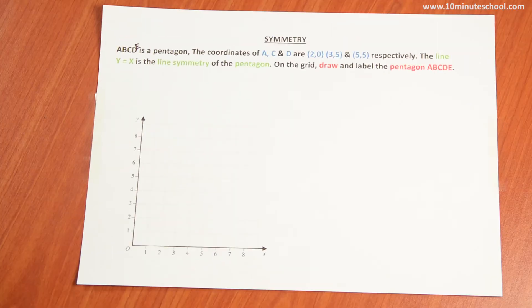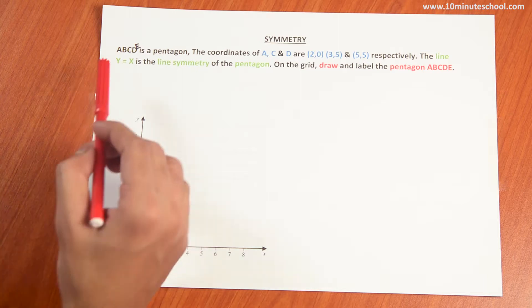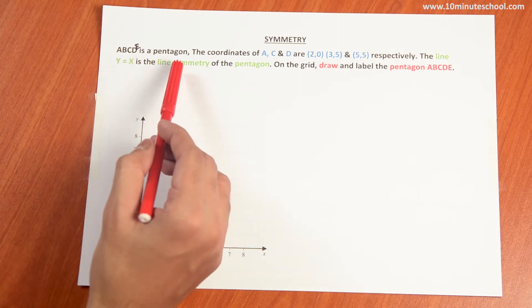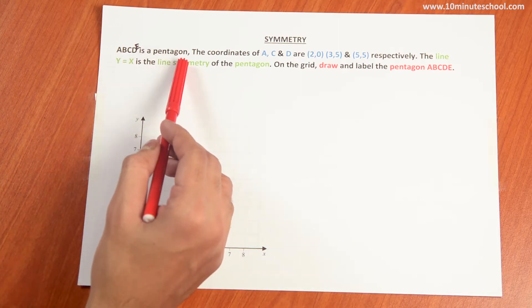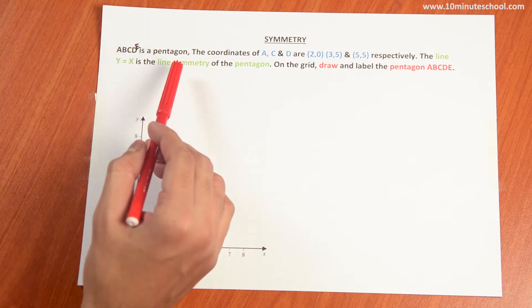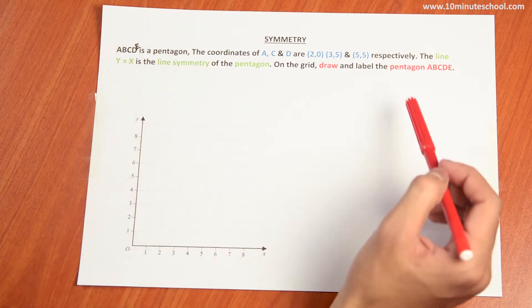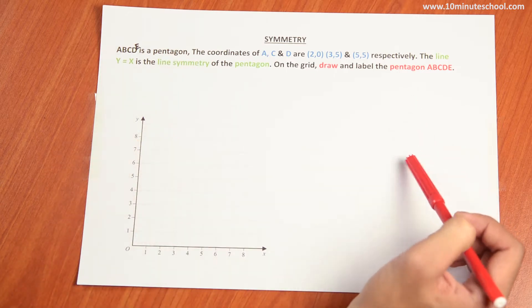I am going to get a symmetry math problem solved. The question involves A, B, C, D — which is a pentagon. A pentagon means a shape which has 5 angles.